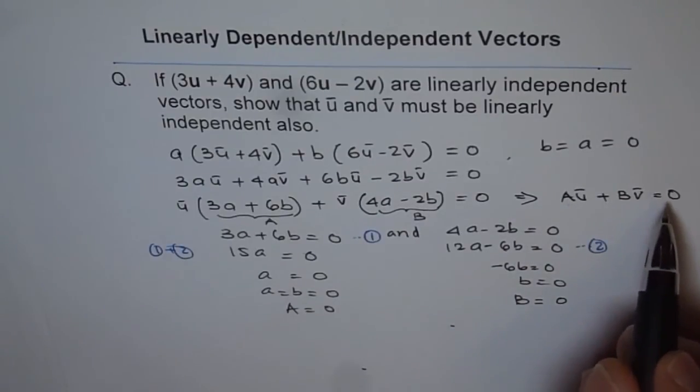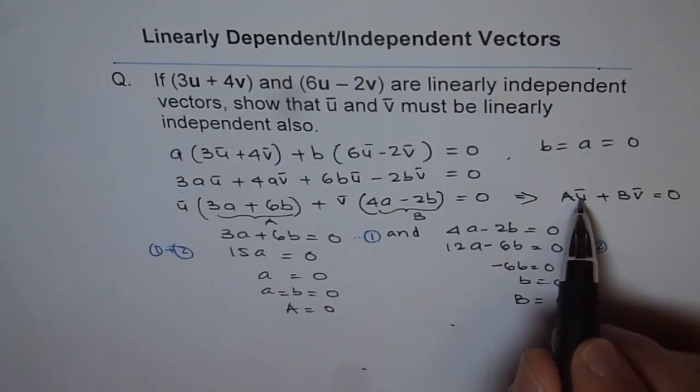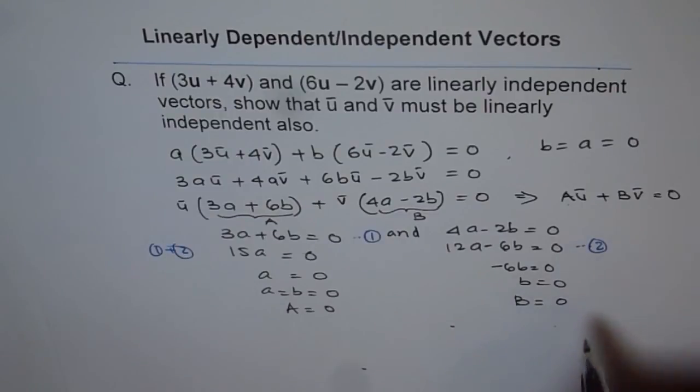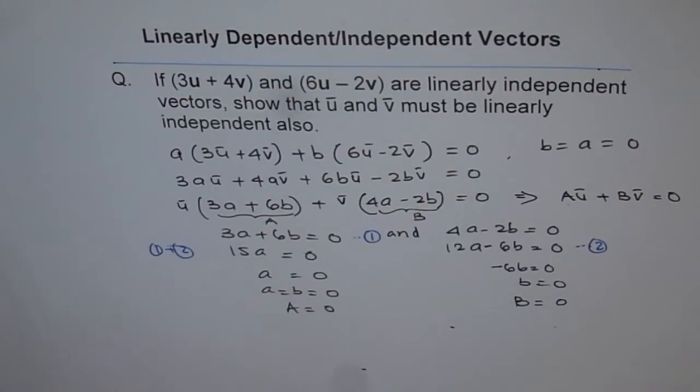...is true only when the scalar multiples of u and v are 0. That means the equation is linearly independent. So that is how we can show that u and v are also linearly independent.